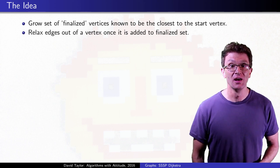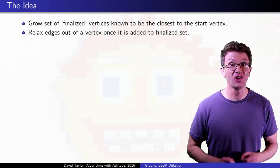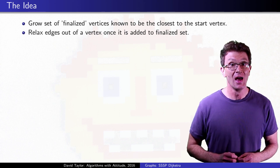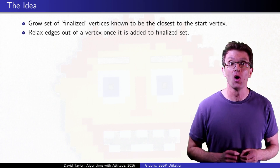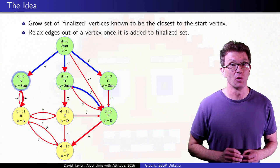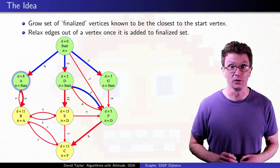The idea behind Dijkstra's is that you keep a growing set of vertices that you know are the closest ones to the start vertex, and you know the shortest paths to all of them. Let's start with a snapshot of the algorithm from the middle of a run to see how and why it works.